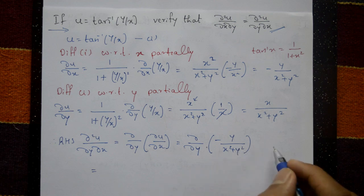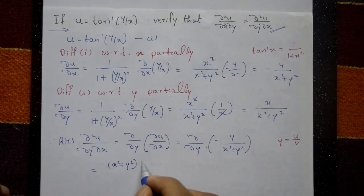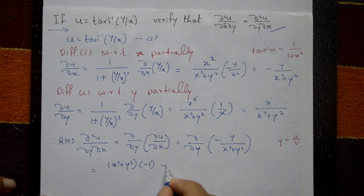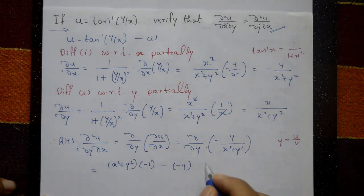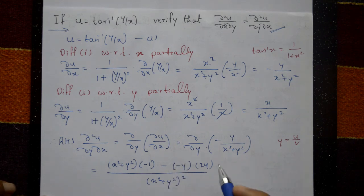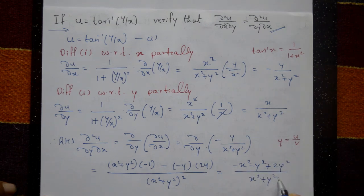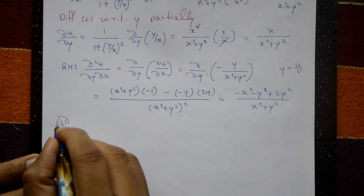Applying the quotient rule to −y/(x² + y²) with respect to y: the numerator gives −1 times (x² + y²) minus (−y) times 2y, all divided by (x² + y²)². This equals (−x² − y² + 2y²) divided by (x² + y²)².